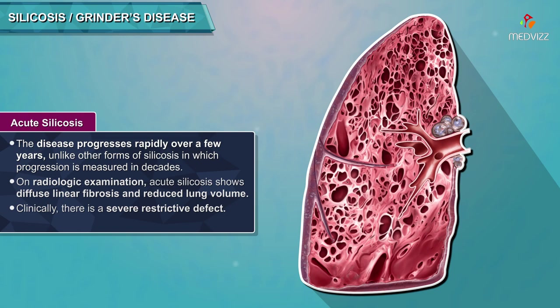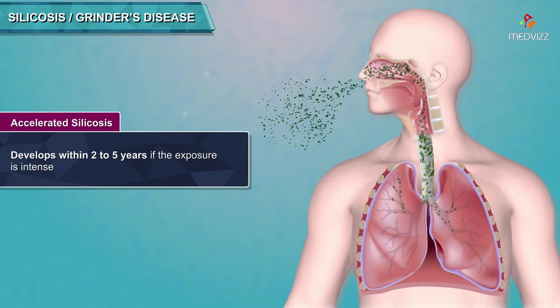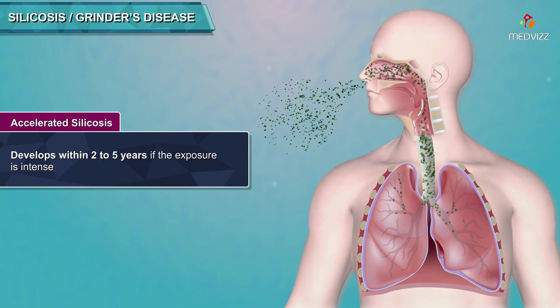Clinically, acute silicosis presents with a very severe restrictive defect and is usually fatal. The disease progresses rapidly over a few years, unlike other forms of silicosis in which progression is measured in decades. Accelerated silicosis develops within 2–5 years if the exposure is intense.